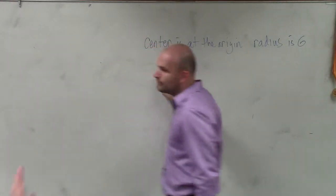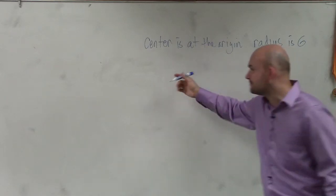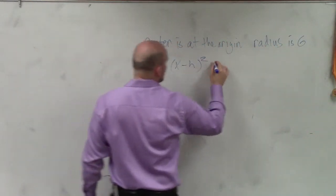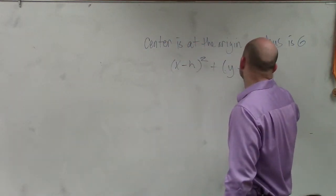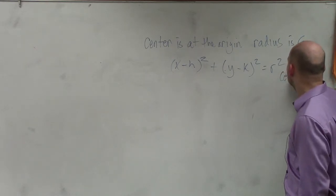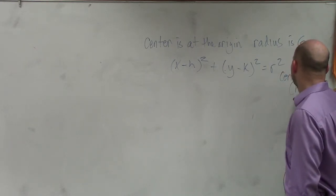If you guys remember, the equation that I gave you for a circle is x minus h squared plus y minus k squared equals r squared. Now, this is when the center was at h comma k.